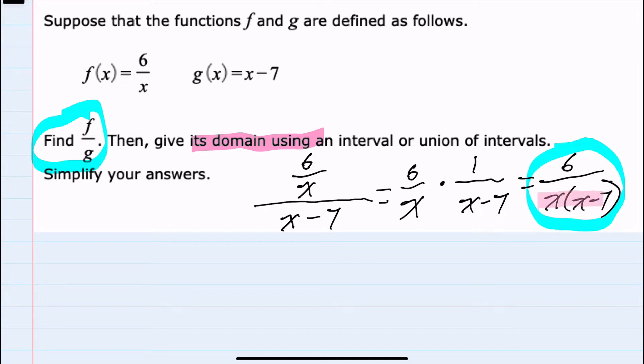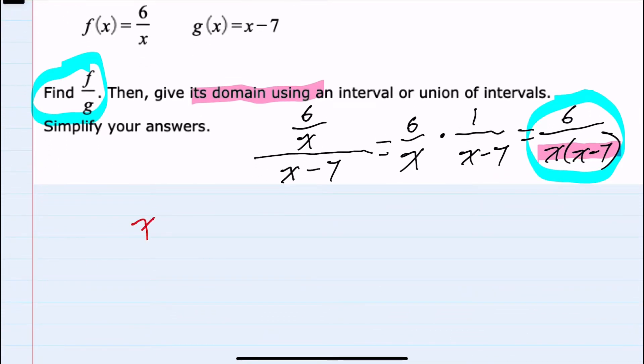And from this, I can say that the denominator here cannot be equal to 0. So that means that x times x minus 7 cannot be equal to 0. And the two values that would cause x times x minus 7 to be 0 would be first whenever x is 0, and the second would be whenever x minus 7 is 0.